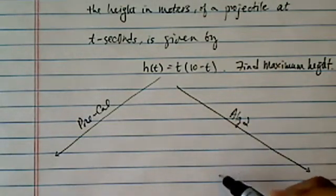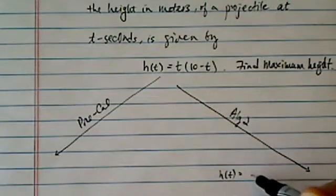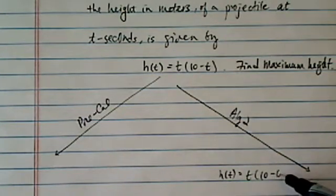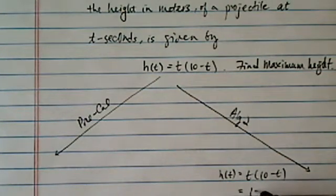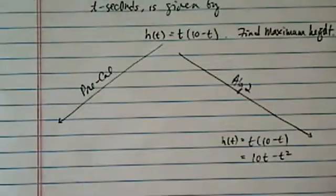Method algebra 2 says, given this equal to t, 10 minus t, let's write it out. It's really 10t minus t squared.